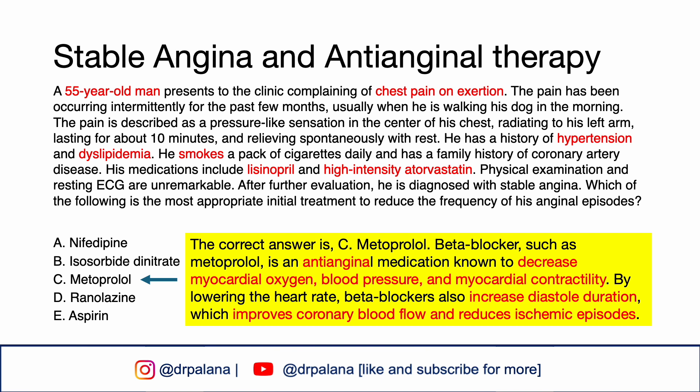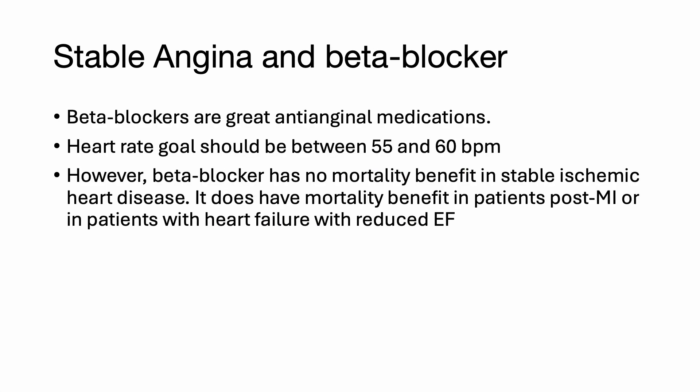The correct answer is metoprolol. This patient presents with typical angina symptoms — chest pain on exertion and relief with rest — which are indicative of stable angina. Beta blockers such as metoprolol are anti-anginal medications known to decrease myocardial oxygen demand, blood pressure, and myocardial contractility. By lowering the heart rate, beta blockers also increase diastole duration, which improves coronary blood flow and reduces ischemic episodes. The heart rate goal should be between 55 and 60 beats per minute while on a beta blocker.